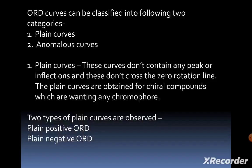ORD curves can be classified into two categories: plain curves and anomalous curves. Plain curves do not contain any peak or inflection and do not cross the zero rotational line. Plain curves are obtained for chiral compounds which lack any chromophore — they have no peak or inflection and do not cross the zero rotational line.